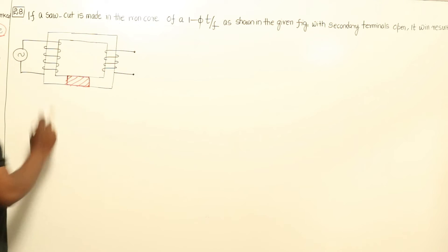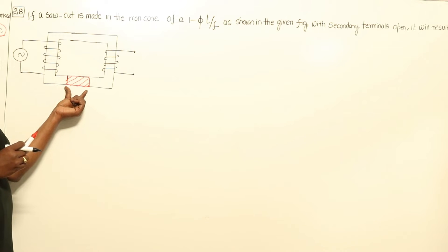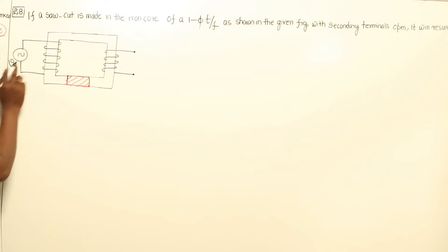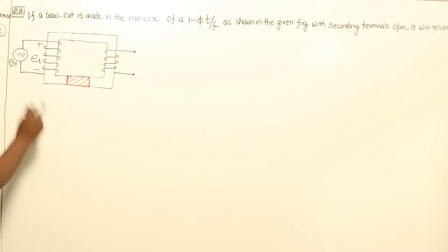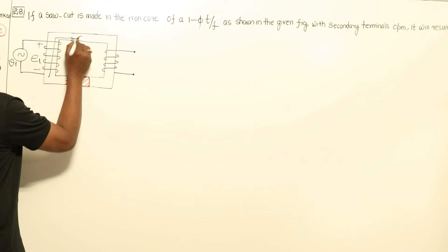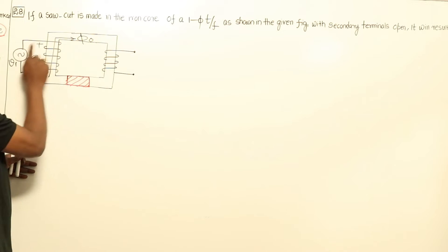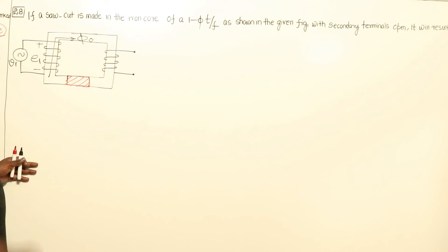Black represents the complete magnetic material case, and red represents the replacement of part of the magnetic material with non-magnetic material. Here, source voltage is constant — RMS value since it is AC. The moment this is constant, E1 also should be constant. E1 is constant means operating flux will be constant. Since V1 is an ideal voltage source, E1 should not change, meaning the RMS value of operating flux should not change from black to red.